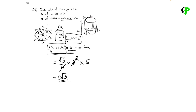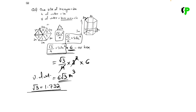So we write 6√3 as the base area. The volume of water equals 6√3 × height. Using root 3 = 1.732, we get 6 × 1.73 = 10.38 m³.